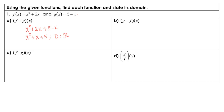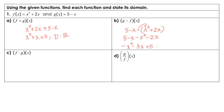For part b, we are subtracting the two functions, and we have to be careful on that one. g of x was 5 minus x, and then we're going to subtract function f. I need to put every part of function f inside parentheses so that I make sure I have the correct signs. So we have 5 minus x, minus x squared, and then minus 2x. Combining all of this, we have negative x squared, negative 3x, and plus 5. The domain here would be all real numbers.